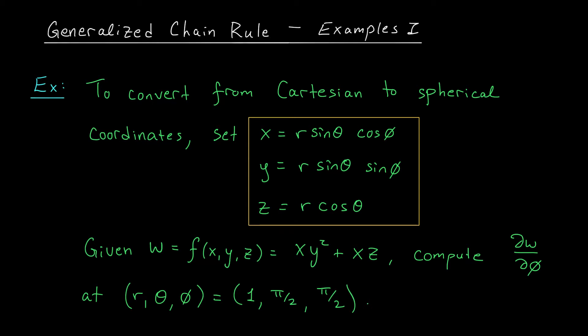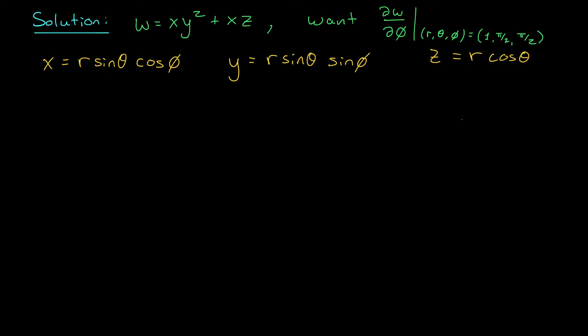Specifically, we want to evaluate that partial derivative at the point r, theta, phi equals 1, pi over 2, pi over 2. So here's our setup: we have a function w that depends on x, y, and z, but these variables in turn depend on r, theta, and phi. We are looking for the partial derivative of w with respect to phi.